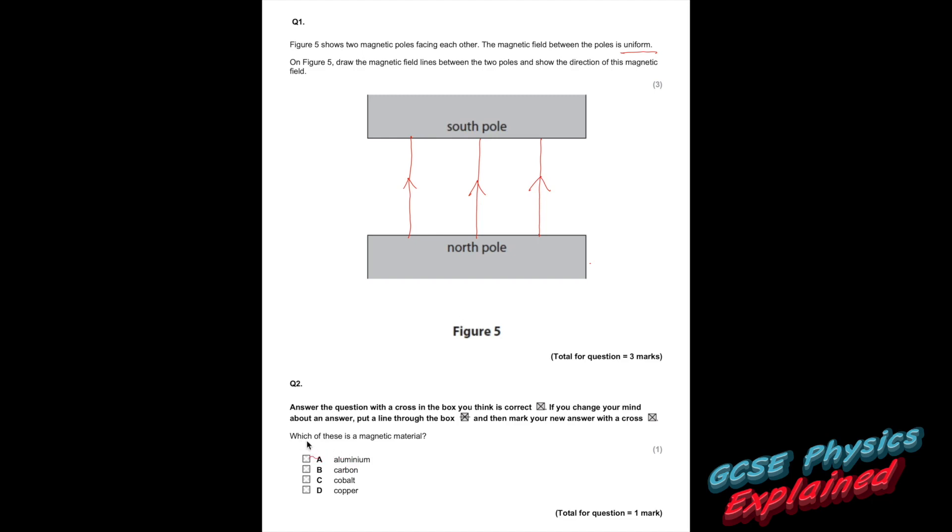Question 2. Which of these is a magnetic material? Aluminium, carbon, cobalt or copper? Right, it's cobalt. So the magnetic materials are cobalt, nickel, iron and steel.